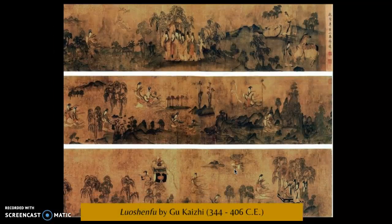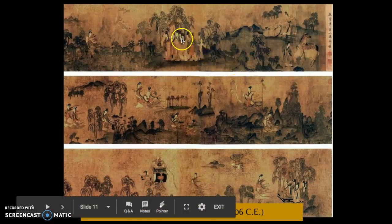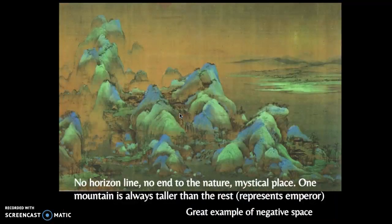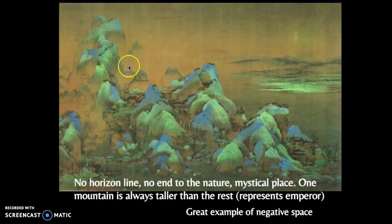Here are some other paintings a little closer to the Han period. You can see the importance of nature, and in this painting human figures appear somewhat more equal within nature. Here is one of my favorites — nature becomes a kind of mystical place. They often have one mountain taller than the others, which can sometimes symbolize the Emperor.